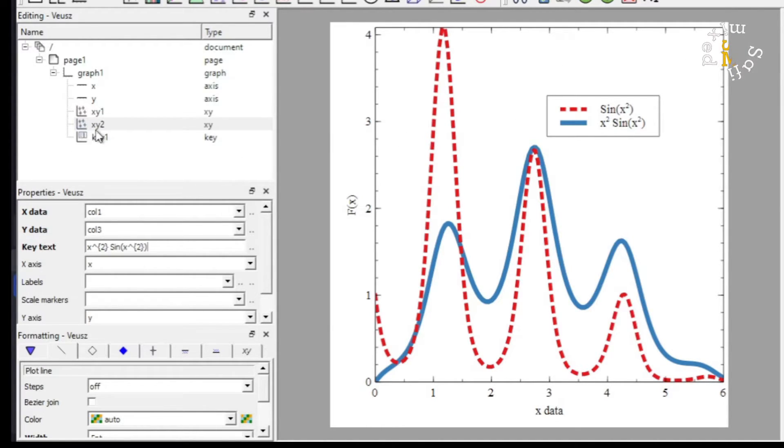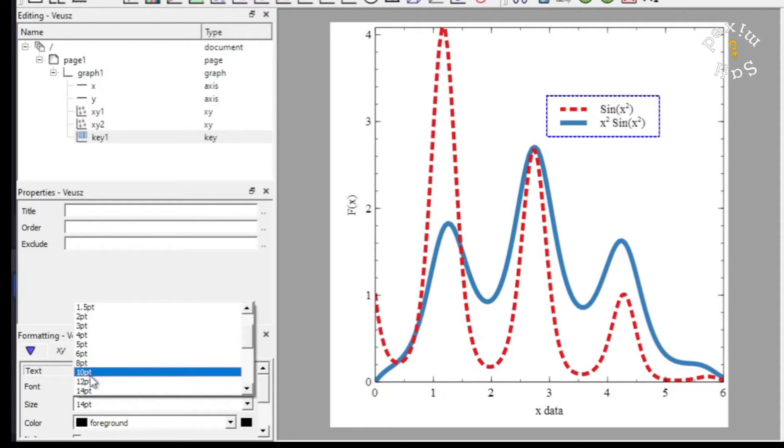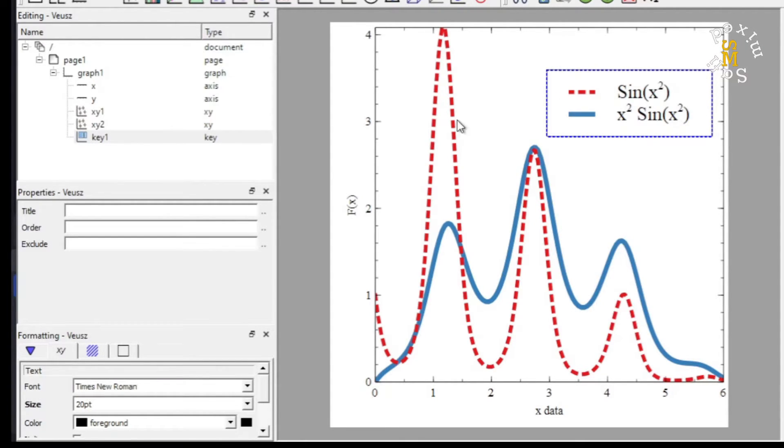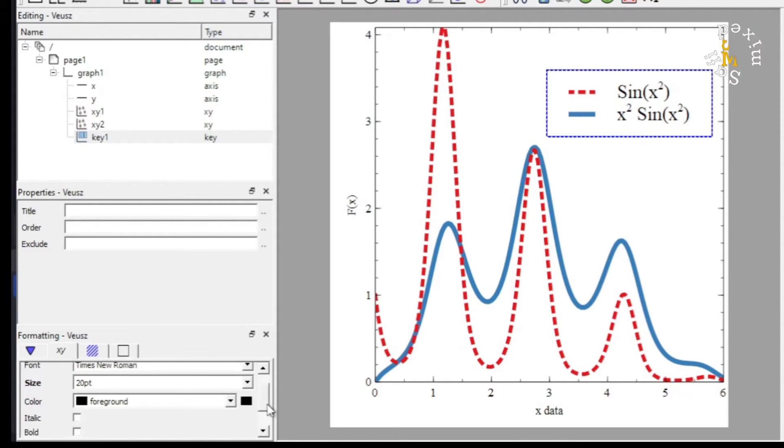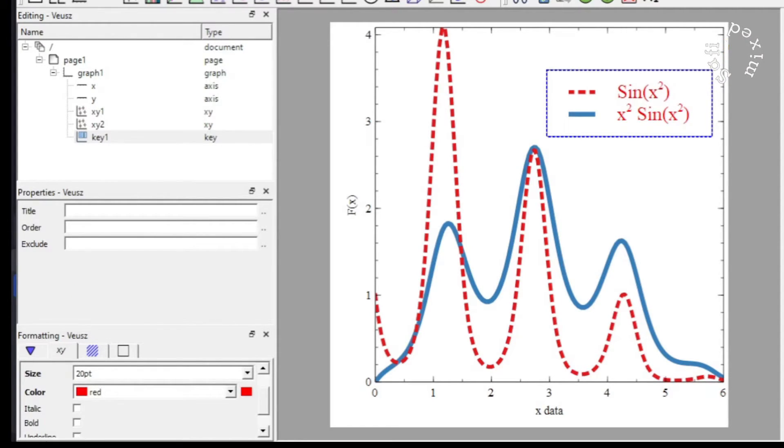Coming back to the key, I can change the font style. I can change the size of the font, for example I want to take this to 20, 40, or anything else. Now it is more obvious. I can change the color from foreground, for example I can convert this to red, you see over here.